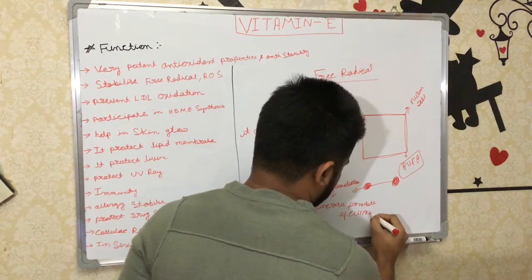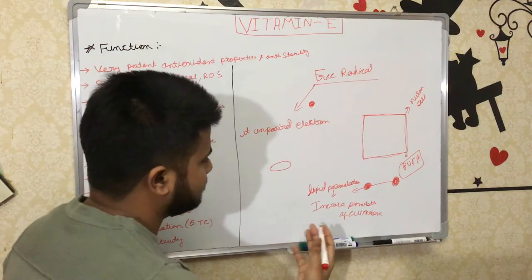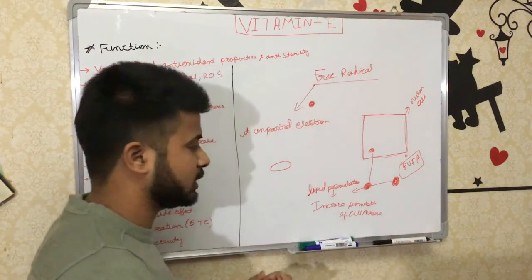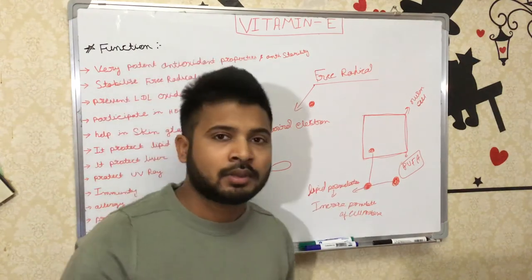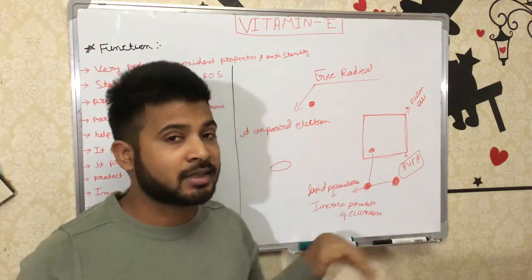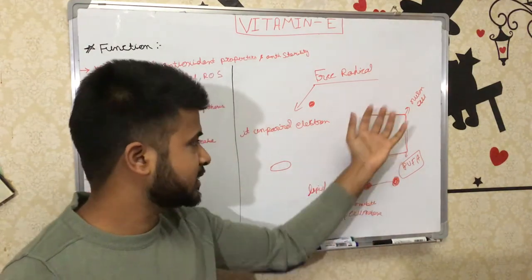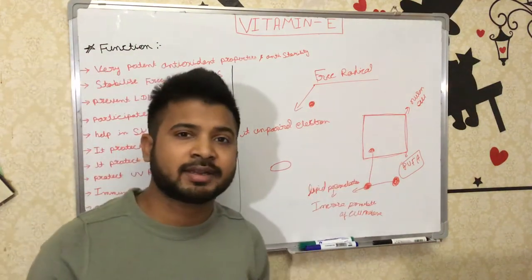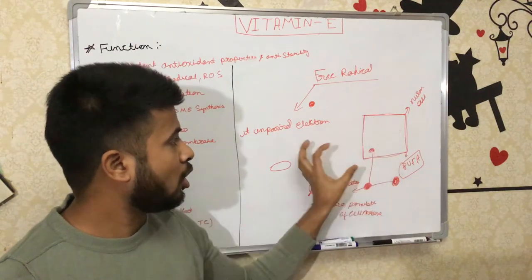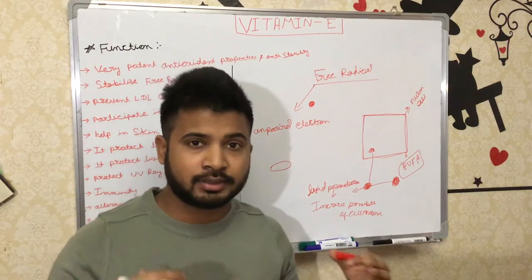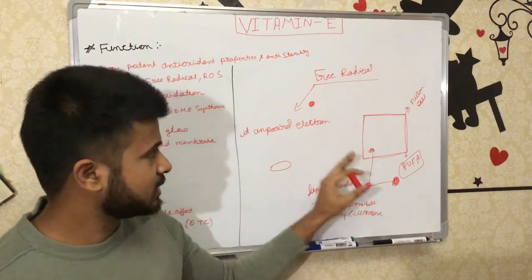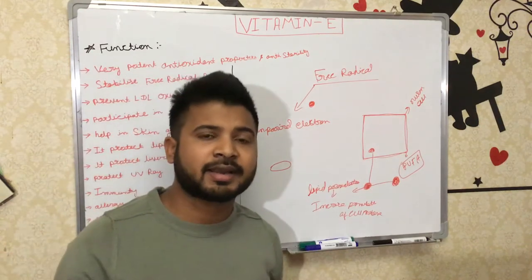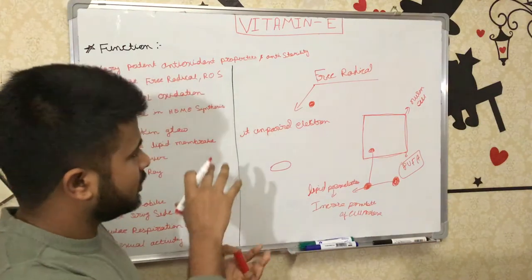After the cell membrane permeability increases, the free radical can easily go inside the cell. It then binds to the DNA, and now the DNA is under the control of the free radical — it cannot perform its normal functions like maintaining the cell membrane or replication. The free radical damages the cell membrane of the neuron cell. I used a neuron cell as an example, but free radicals can damage all types of cells by this same mechanism.